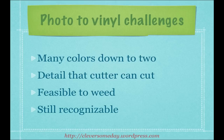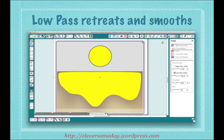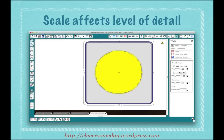If you have access to Photoshop, Photoshop Express, or other similar tools, you'll want to pre-process your photo there to make this process a lot easier. But I'm going to focus on what can be done in Silhouette Studio alone. So let me give you a quick review of what we talked about in the last video — the technical details about the different filters. High Pass is the Edge and Detail Finder. Low Pass retreats from the edge and has a tendency to smooth the outline. Scale affects the level of detail that you get in your trace.